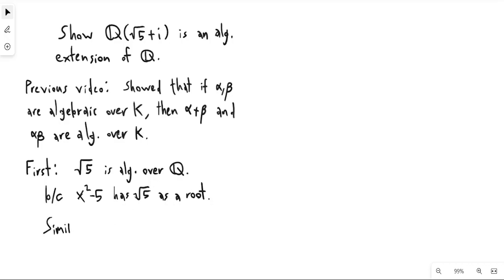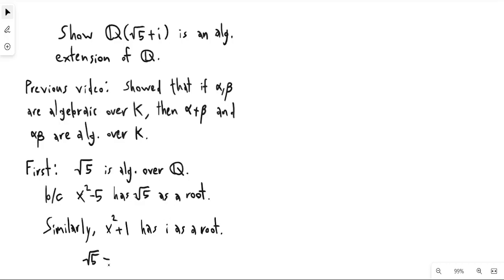Similarly, x squared plus 1 has i as a root — and also minus i. So basically, this shows that square root of 5 is algebraic over Q and i is algebraic over Q. And so that gets us really easily what we wanted to show, which is that the sum of these two things is algebraic over Q. So this is one way that you can show this.